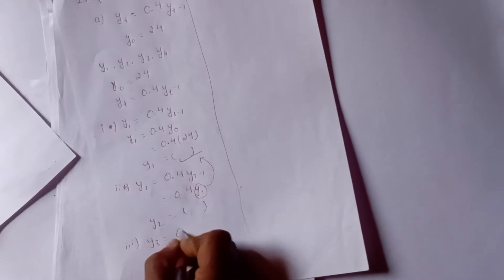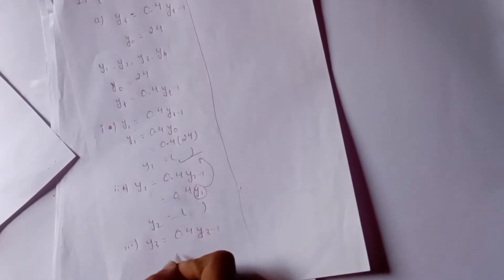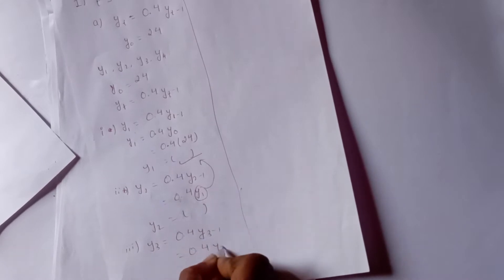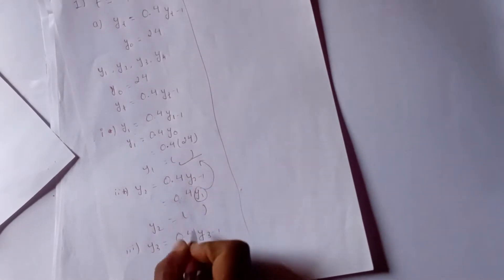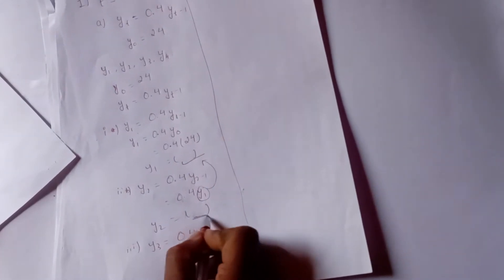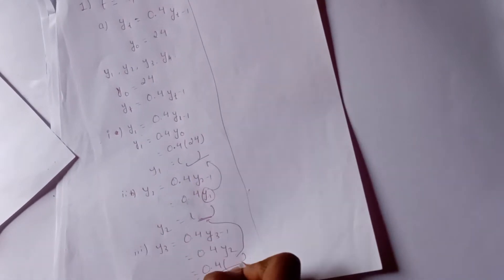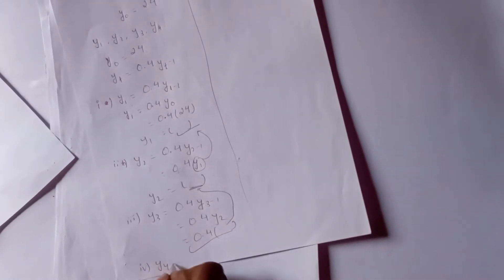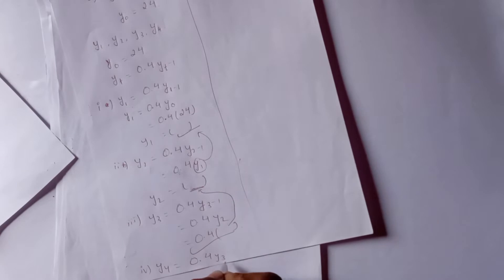y3 equals 0.4 times y of 3 minus 1, which equals 0.4 times y2. And y4 equals 0.4 times y of 3, as well as 4 minus 1.